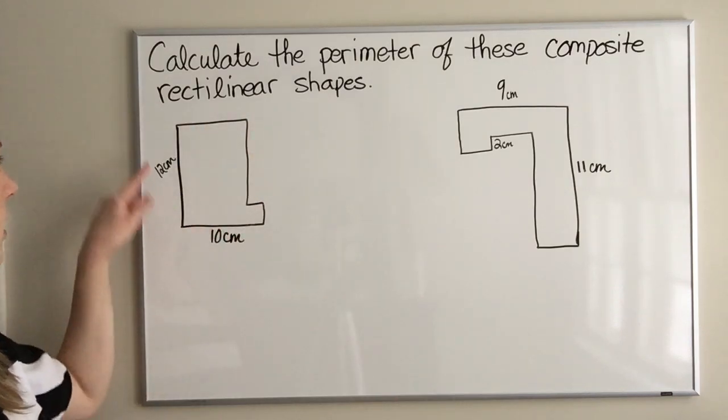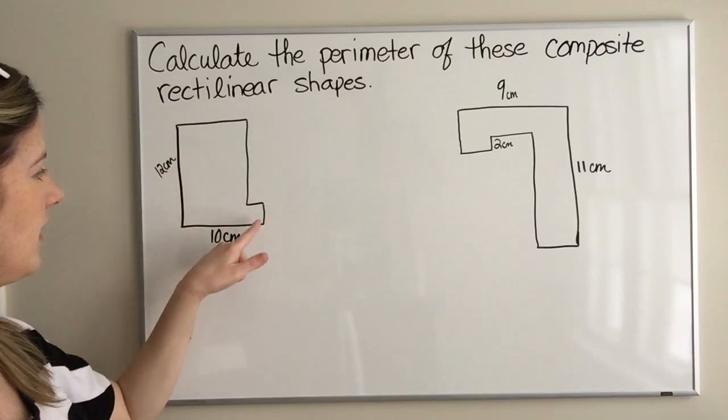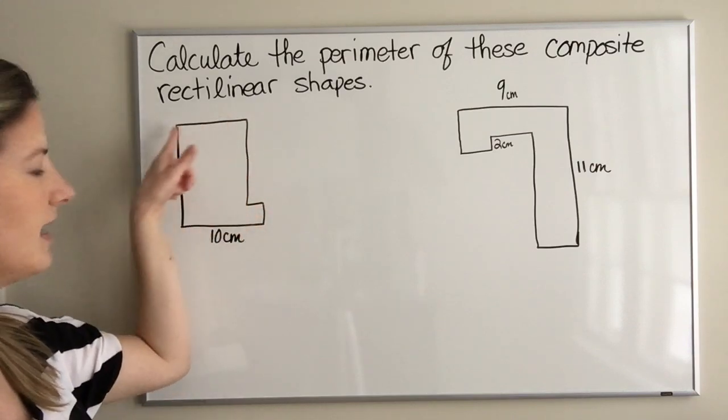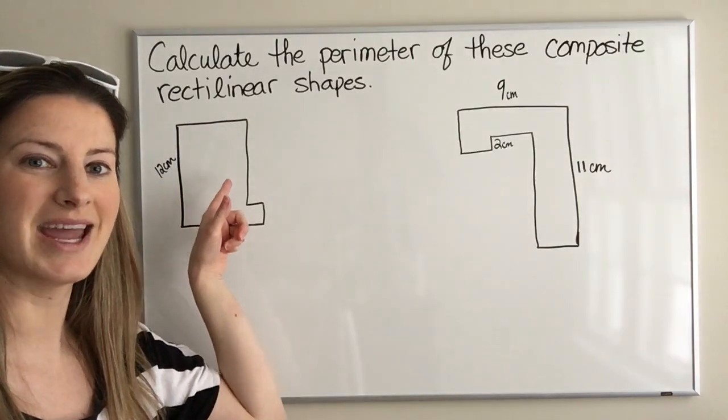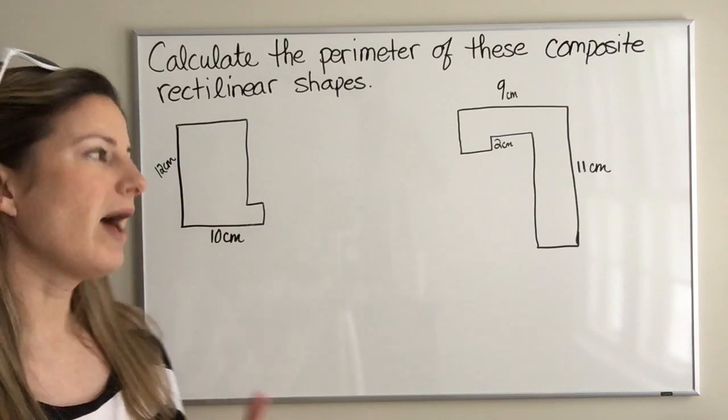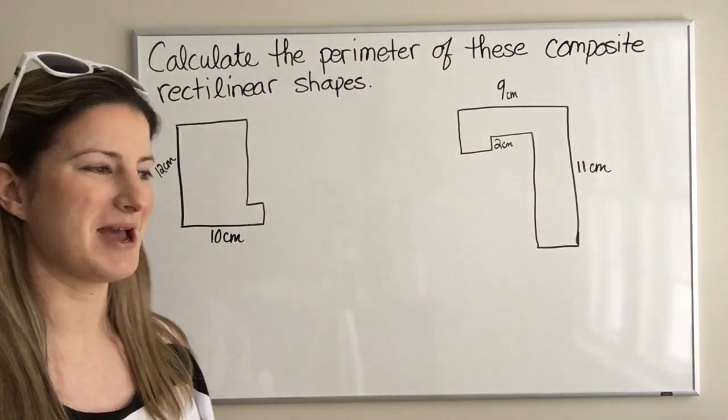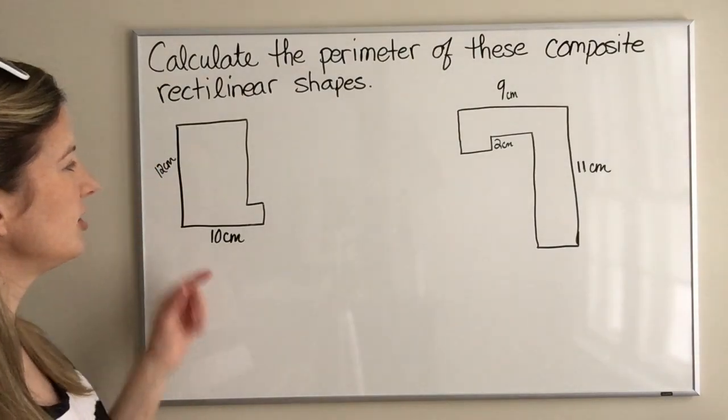We need to know the perimeter of this shape right here. We know this side is 12, this side is 10. Well how do we find this piece, this piece, this piece and this piece? That's usually how you're taught to find perimeter, right?